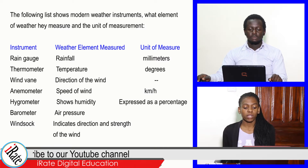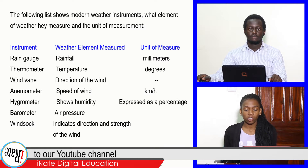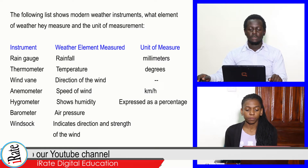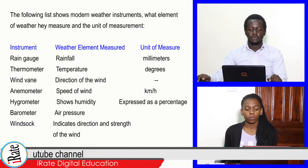Number six, the barometer measures air pressure. And finally, the wind sock indicates the direction and strength of the wind.